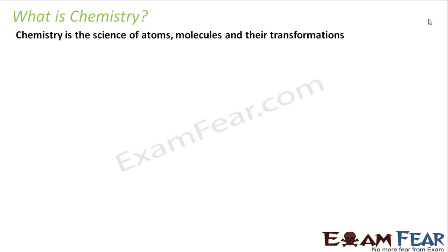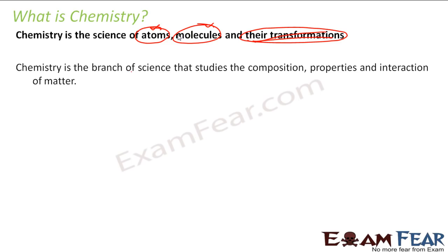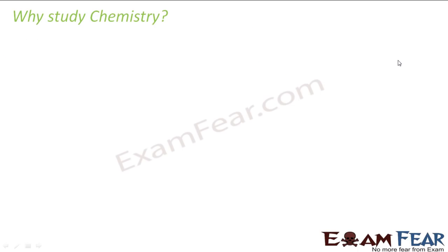What is chemistry? Chemistry is nothing but science of atoms, molecules and their transformation. We can also say chemistry is a branch of science that studies composition, properties and interaction of matter. These two definitions define chemistry well.